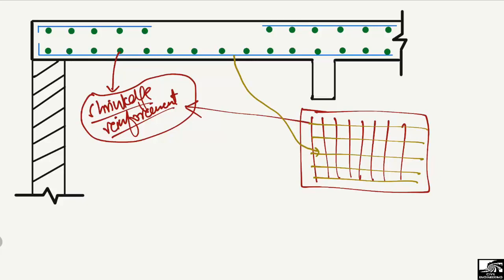We also have another type of reinforcement at the top of the slab where there is a negative bending moment. For example, the bending moment diagram shows negative bending moment at this support. We must provide reinforcement at the top of the section, because we always provide reinforcement where we have tensile stresses or bending stresses.